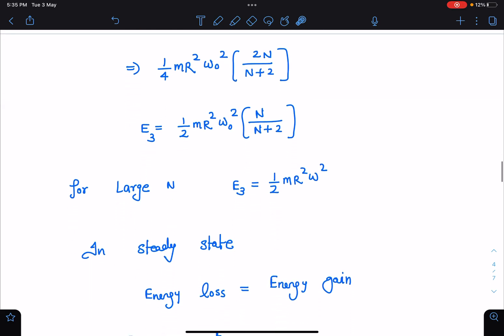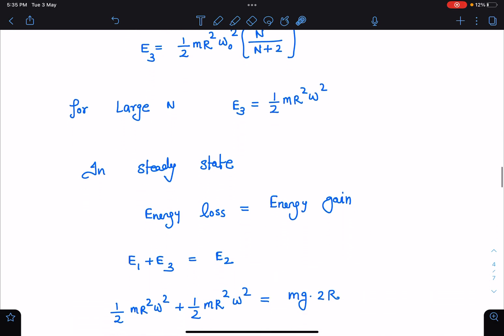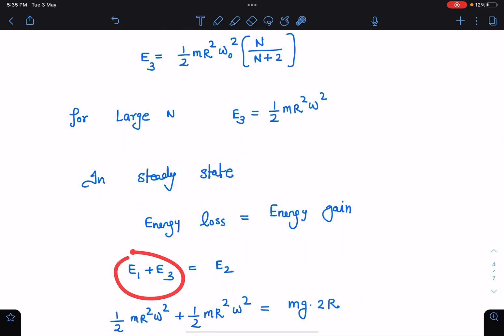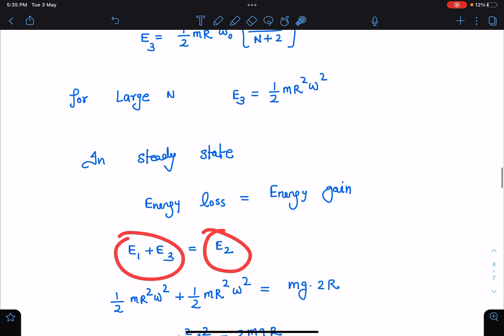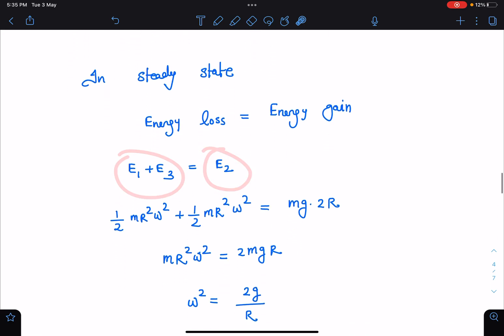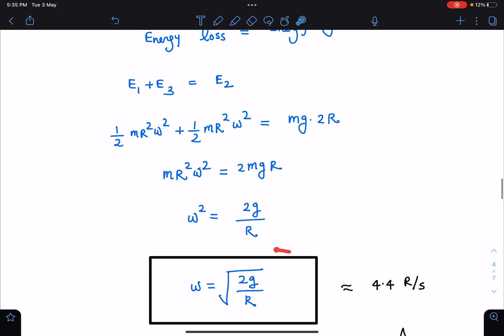So in steady state you can say the energy loss which is happening in a cycle, and that is equal to energy gain in a cycle. So E1 plus E3 is equal to E2. When we substitute the values, we are getting omega is equal to root of 2g/R. So this is going to be the right answer for this problem, and roughly it is 4.4 radian per second.